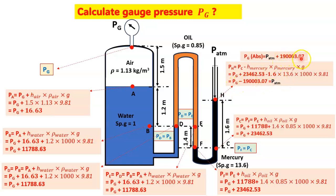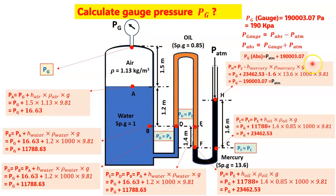Setting Ph equal to P_atm and solving, the gauge pressure Pg = 190003.07 Pa, which is approximately 190 kPa. So the final gauge pressure of the air in the tank is 190 kPa.